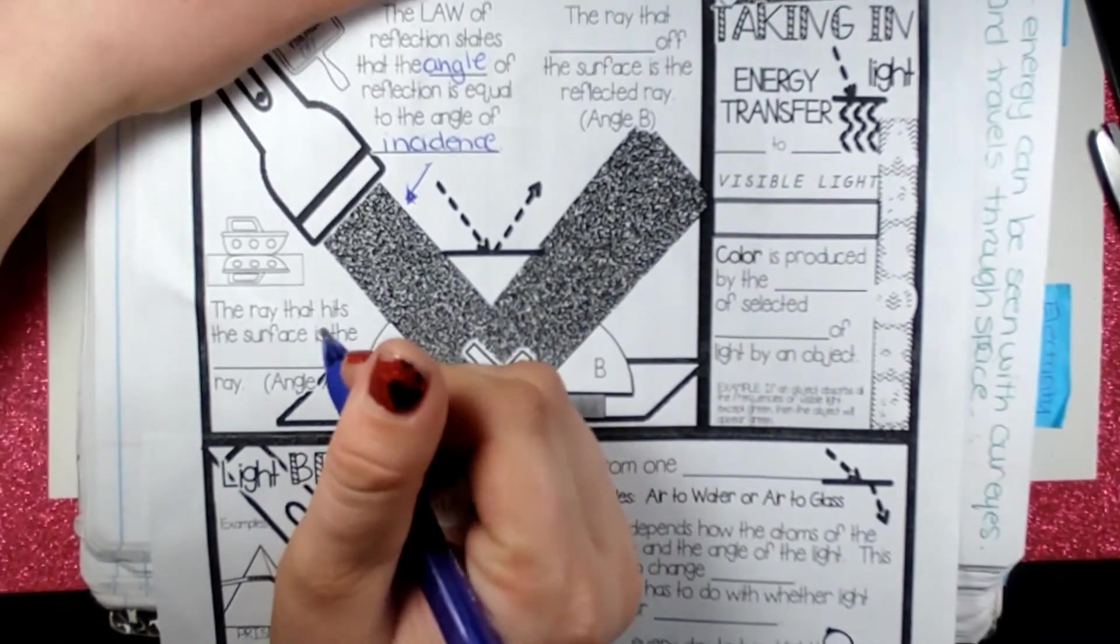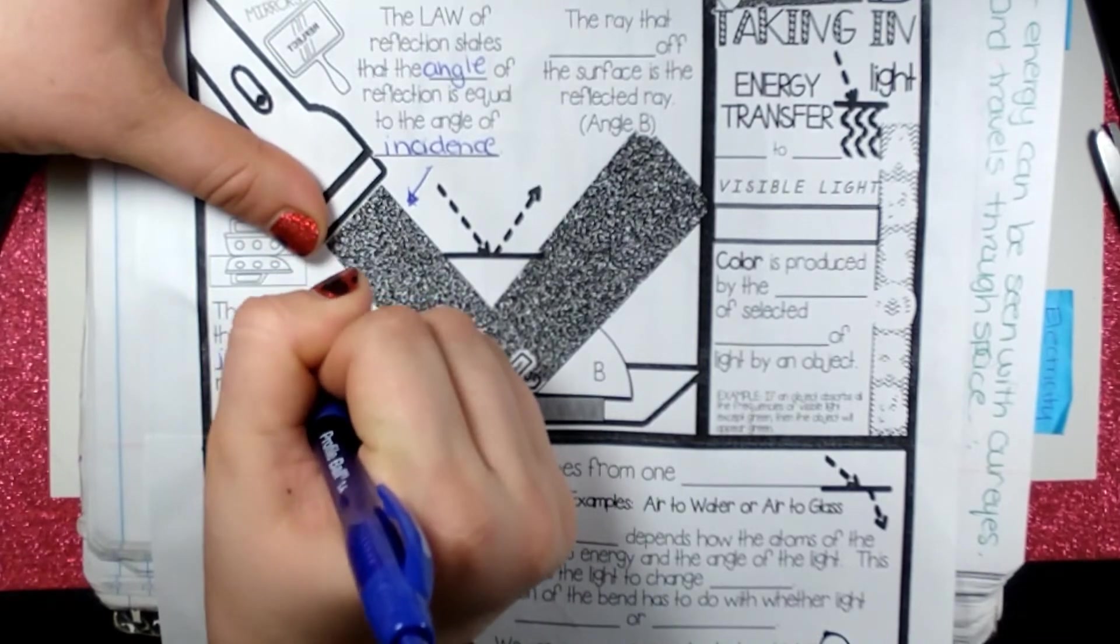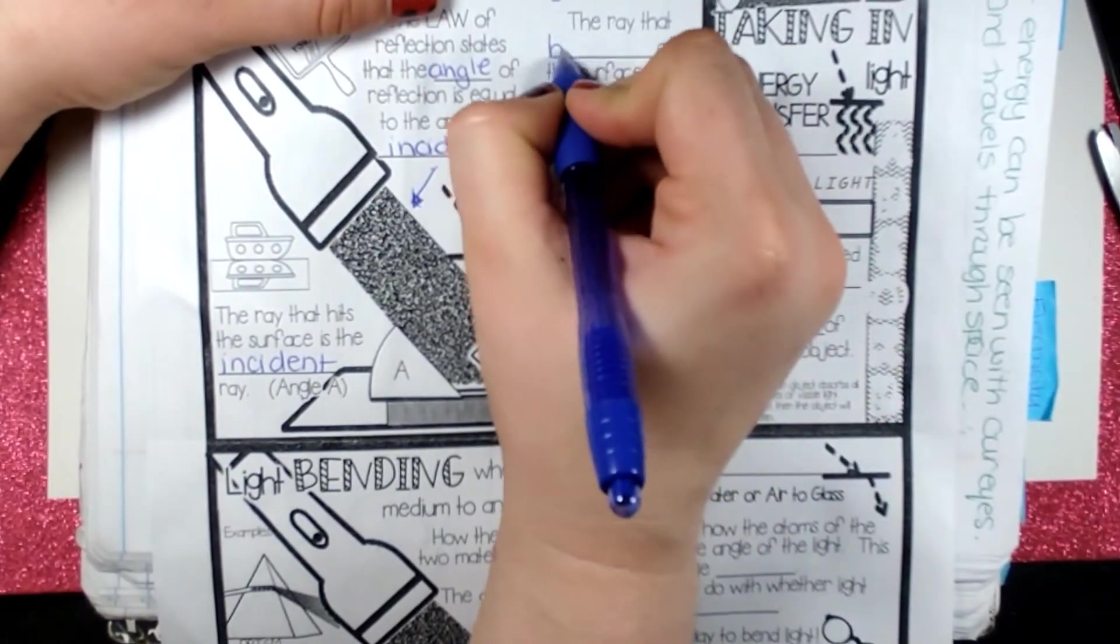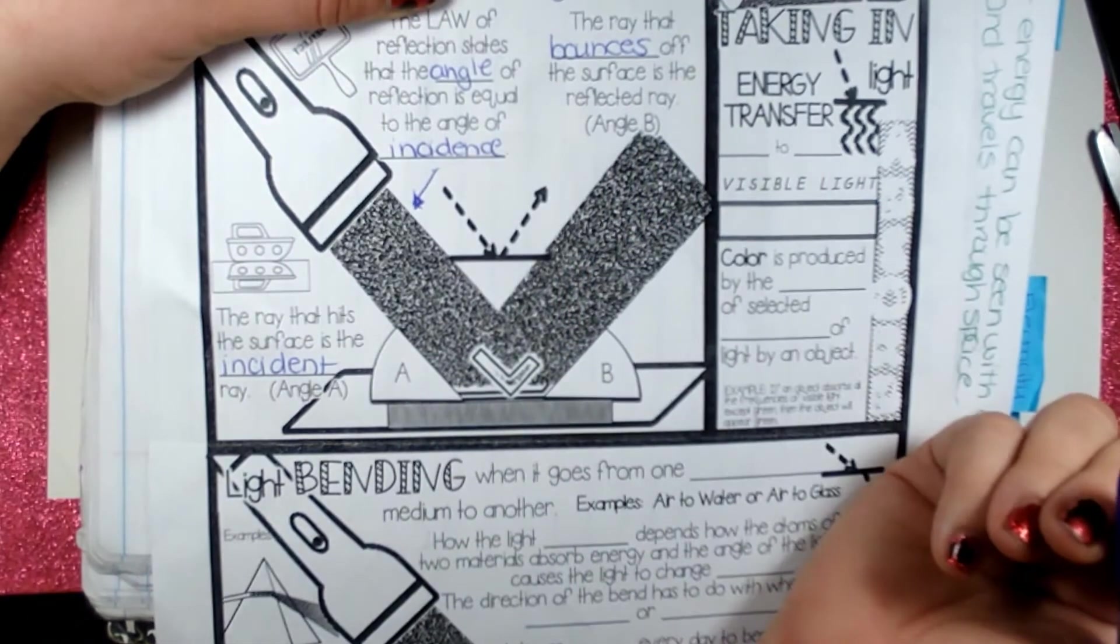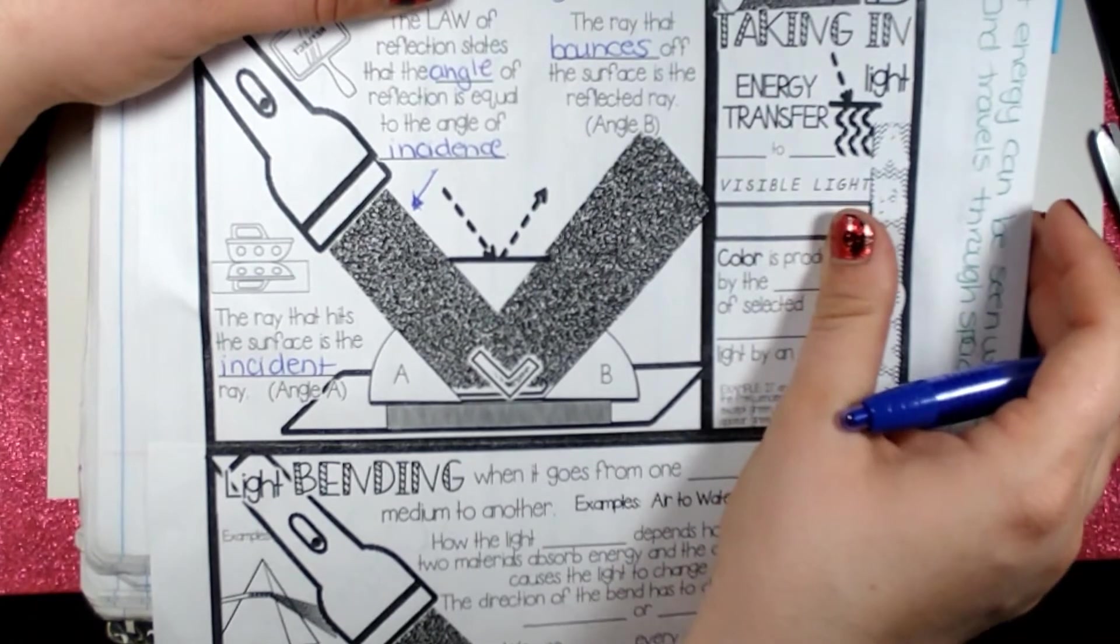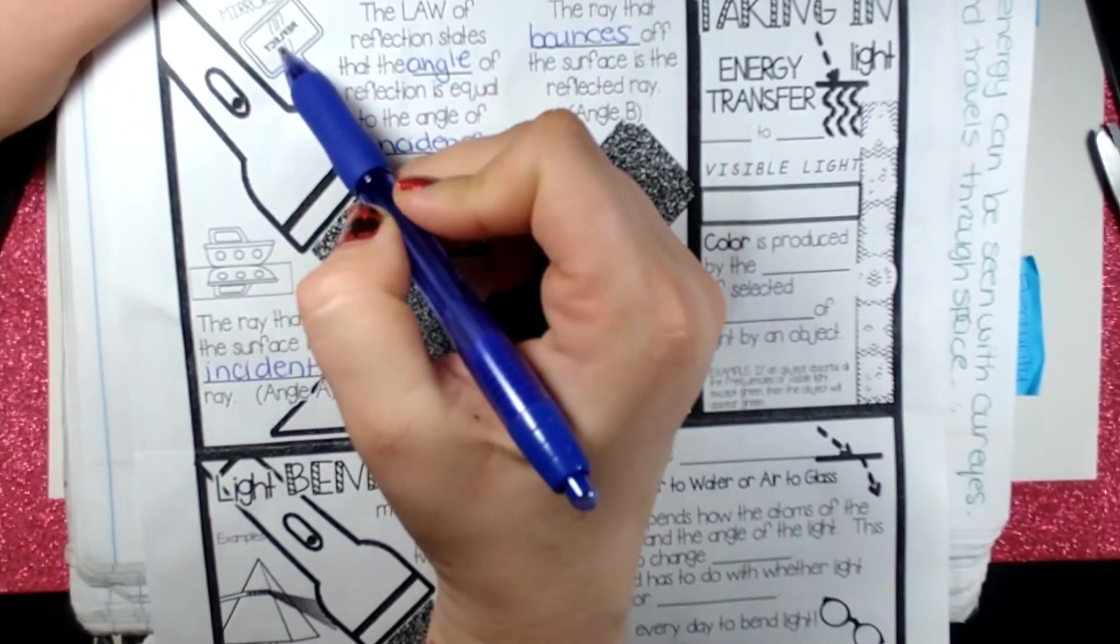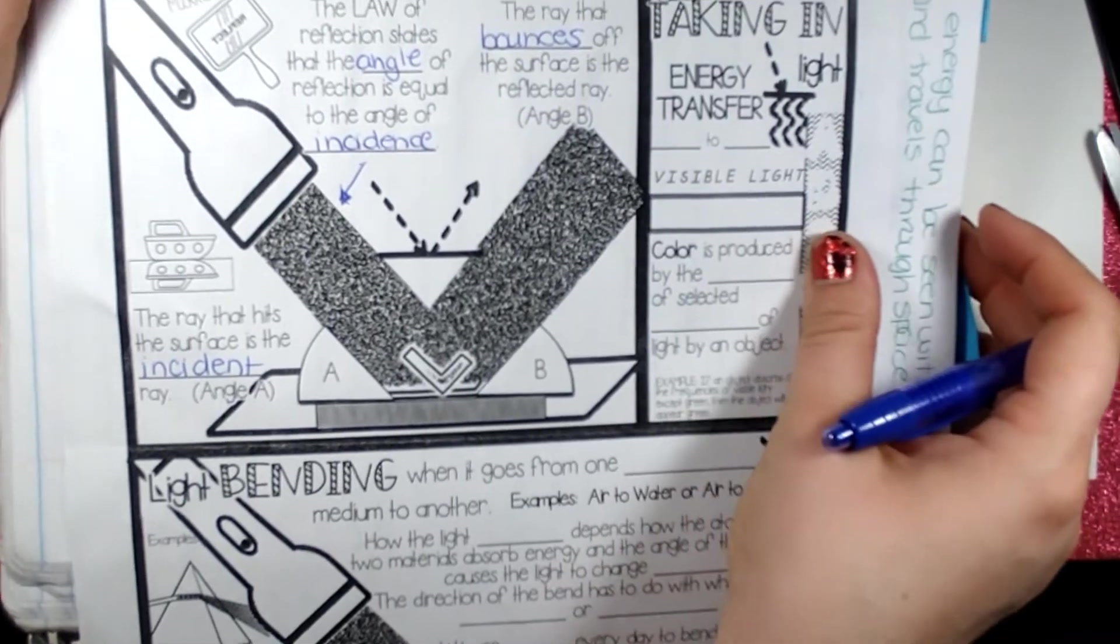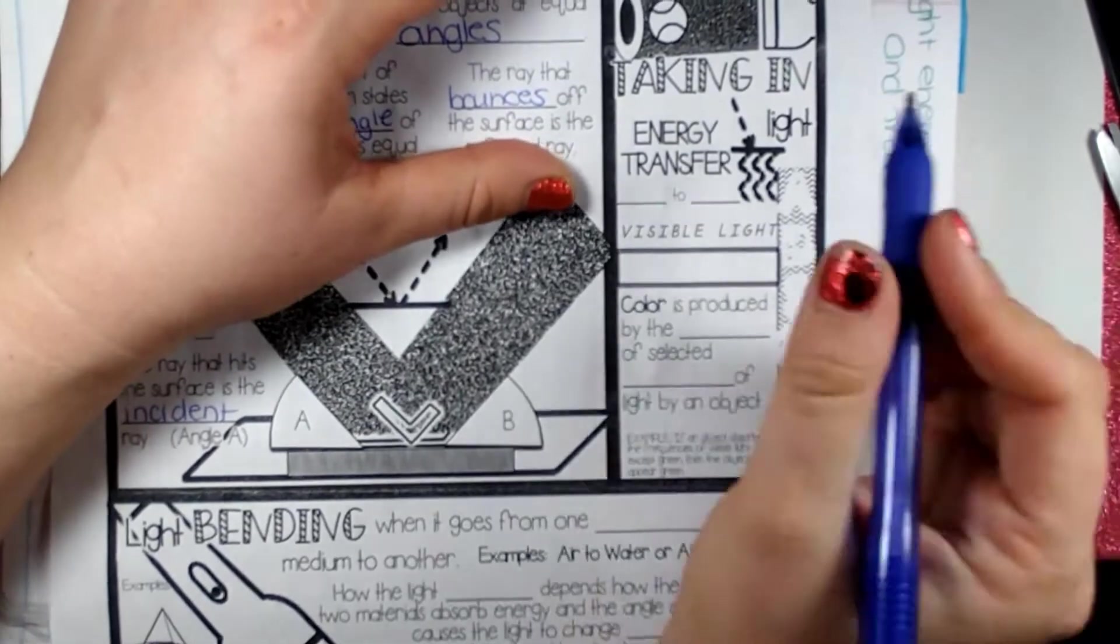Okay, so the ray that hits the surface is the incident ray. It's the incidence, and then it's going to bounce off and be the same. Okay, the ray that bounces off the surface is the reflected ray. And mirrors, they reflect, but they reflect backwards. So that's something that is also fun to do, is to write messages and the light reflects backwards.